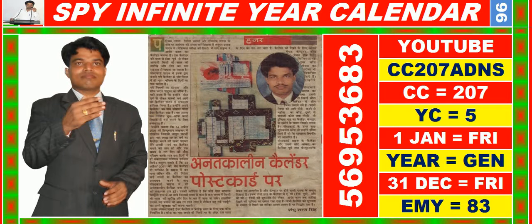Good morning, dear friends. You are heartily welcome in Master Key of Success. In this video you are watching SPY infinite year calendar for the year having calendar code equal to 207, and you may also search it on YouTube by CC207 ADNS.